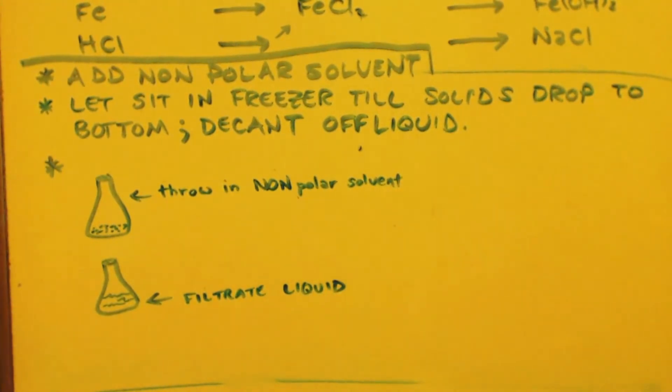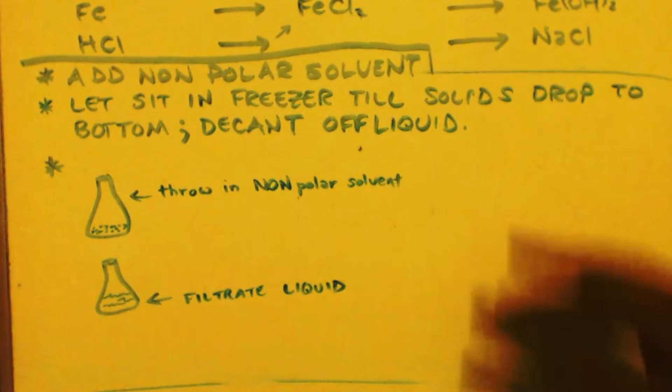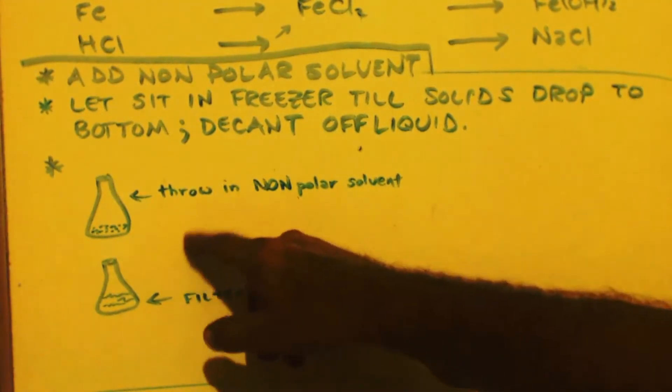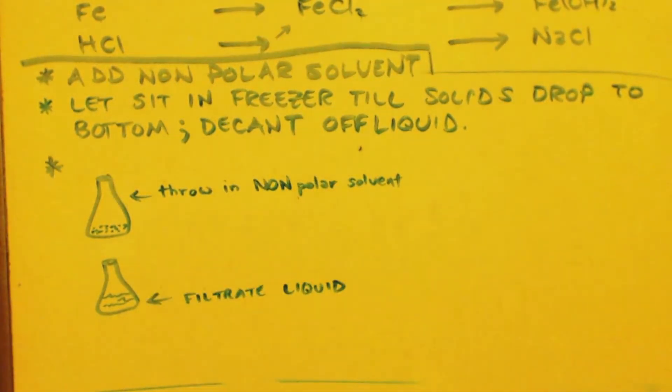Don't have your vacuum pump on the whole time or your methylamine will just go right through the pump. Just turn it on for a second to get it flowing when it stops. Get it somewhat dry and take that and add it to your mother liquor.